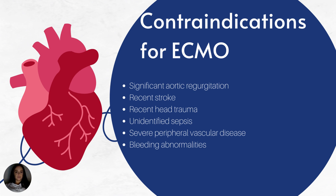Related to severe peripheral vascular disease, if the patient has a history of DVTs or very poor vascular and venous circulation, cannulating through the femoral artery can lead to loss of arterial flow to the extremity. For unidentified sepsis, we don't want to introduce any foreign body and give the patient another source of infection.